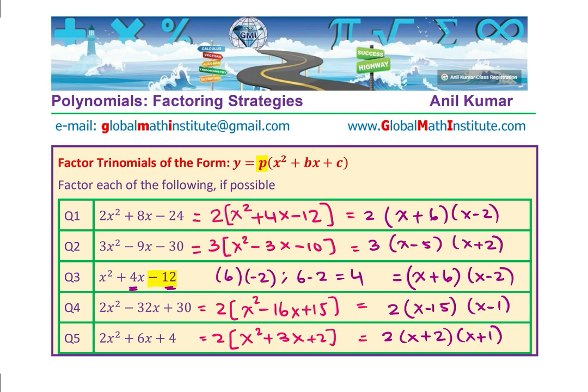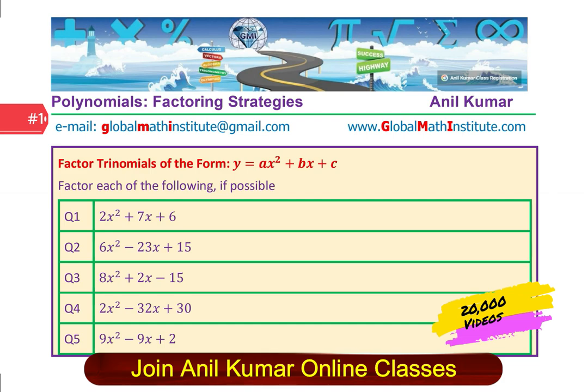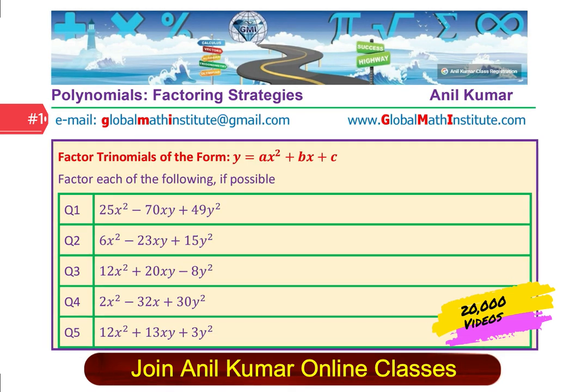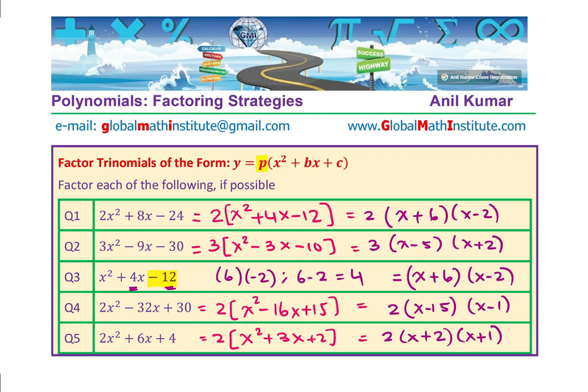In this video, we have seen how we factor trinomials when the leading coefficient a is 1, or we have a common factor, and then same strategy. In the next video, we will explore how we do difference of squares, and then we are going to take up other questions where the leading coefficient is not 1. I hope with this, you have learned some concepts of factoring, and I hope you find them easy and useful. Feel free to share your comments and suggestions. In case you like and subscribe to my videos, that'd be great. Also, post the questions if you have any, and in case you want to learn from me, do send an email on the address given. We can always take you through this success path with great concepts. Thank you, and all the best.